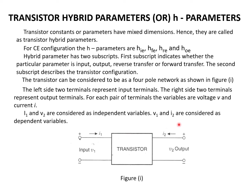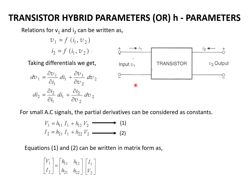V1 and I2 are considered as dependent variables, where V1 is the input voltage and I2 is the output current. Since I1 and V2 are independent variables, V1 and I2 can be written as functions of the independent variables I1 and V2.